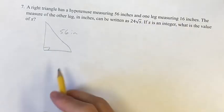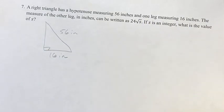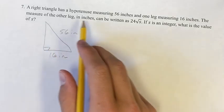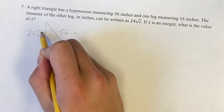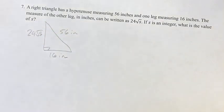We're also given that one of the legs measures 16 inches and the measure of the other leg can be written as 24 root s. We don't know the value of s yet and that's what it's asking us to find.